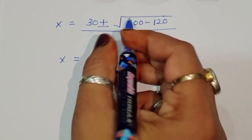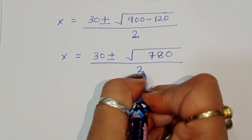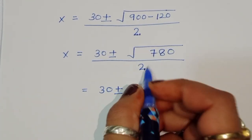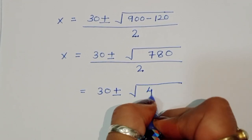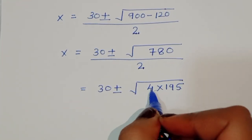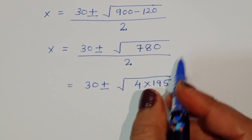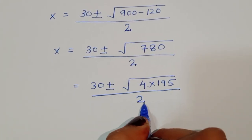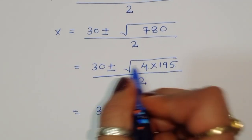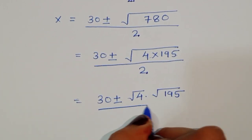So x equals 30 plus or minus square root of 780, divided by 2. We can simplify square root of 780 by writing it as square root of 4 times 195, which equals square root of 4 times square root of 195, divided by 2.